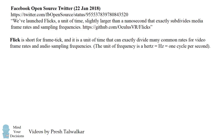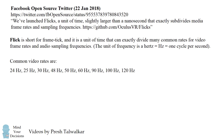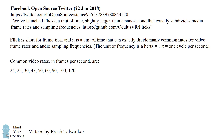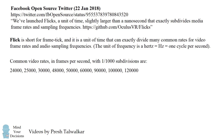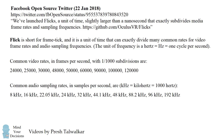The unit of frequency is a Hertz, abbreviated Hz, which is one cycle per second. Common video rates vary from 24 Hz to 120 Hz. We can convert these into frames per second, and if we wanted to subdivide these into 1,000 subdivisions, we would multiply each by 1,000. Common audio sampling rates are measured in kilohertz — these are samples per second and range from 8 kilohertz to 192 kilohertz.